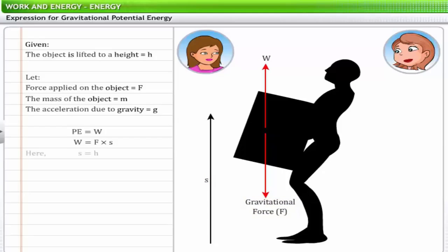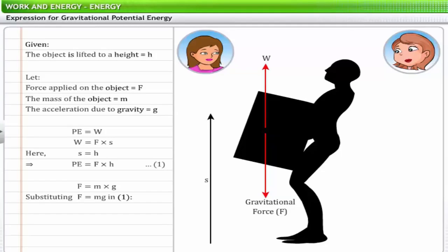We can determine the displacement of the object by measuring the height through which it has been lifted. The applied force on the object equals the weight of the object. The weight equals the product of the mass of the object and the acceleration due to gravity. Hence, gravitational potential energy of an object is the product of its mass, its acceleration due to gravity, and the height through which it is raised: PE = mgh.